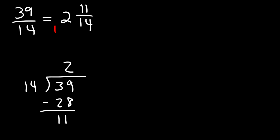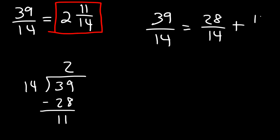So that's one way in which you can convert a fraction into a mixed number. Another way is you can do it like this. You can break down 39 into 28 and 11. Now you might be wondering, how do you get these numbers? To get the 28, you need to identify the highest multiple of 14, just under 39.